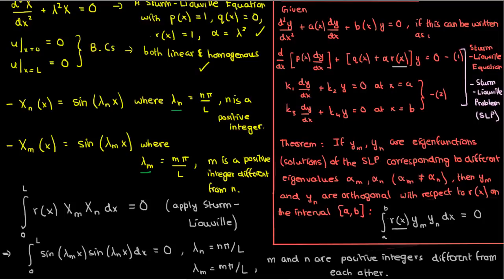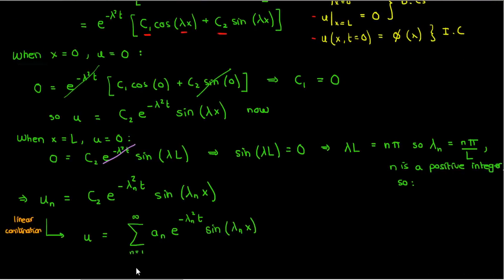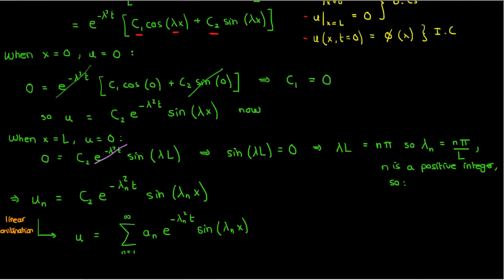Anyway, let's go back to our PDE solution and let's apply the initial condition. So when t is 0, u is phi of x.